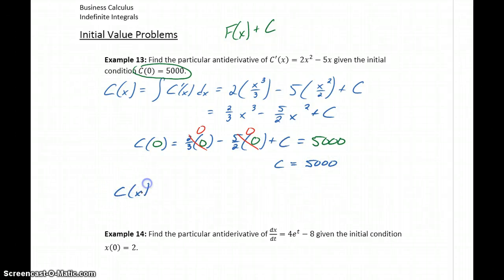Which means that our particular antiderivative, c(x), will be 2/3 x³ minus 5/2 x² plus 5000.